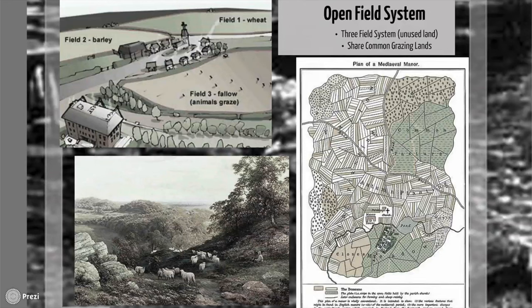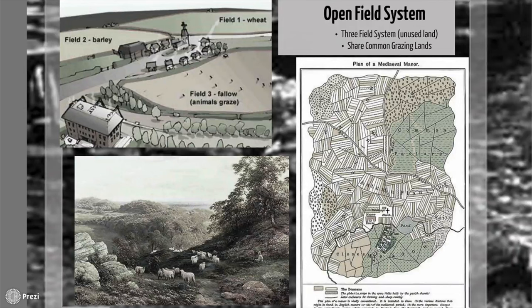One-third of the land just sat there doing nothing. And you can see on the bottom left, they would use it for grazing land — the area where the animals could run, and of course their poop would help make the land fertile again. This area was known as the open common pasture area. For the poor farmers, this really worked out well because if they didn't have enough land and couldn't produce enough food, they had that common pasture area to grow a little extra food for themselves. And this system worked for a while.